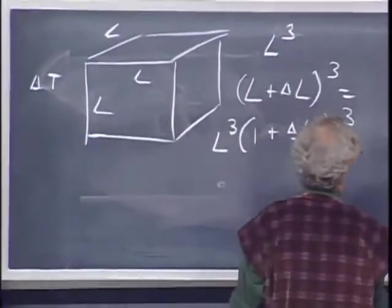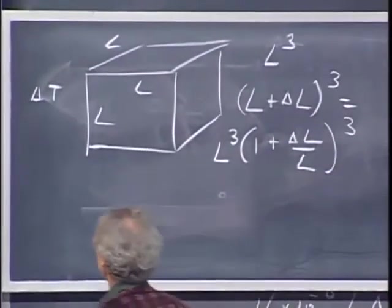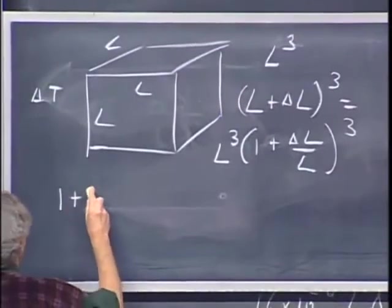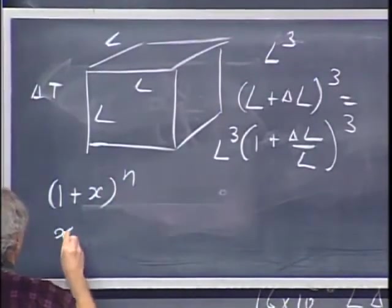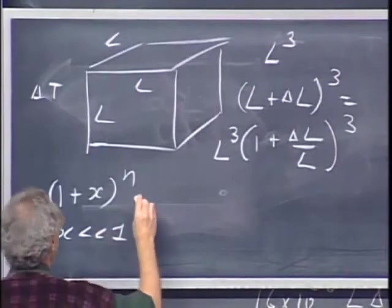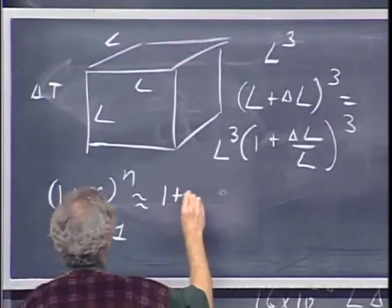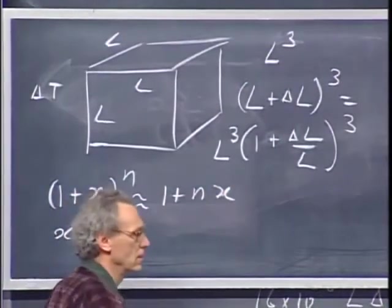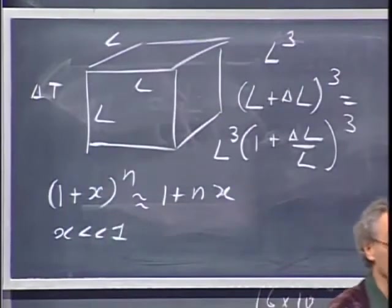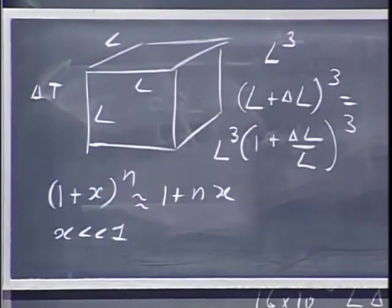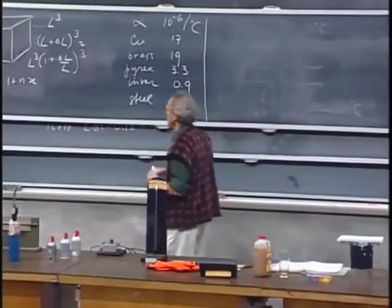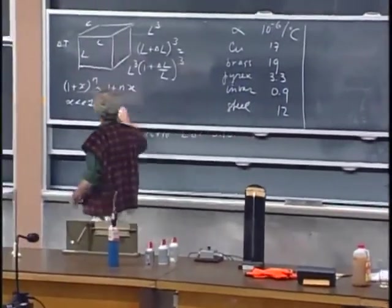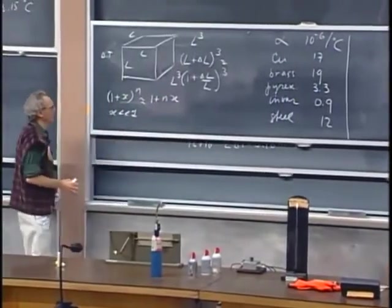Now, perhaps you remember, or at least you should remember, that one plus x to the power n, in case that x is much smaller than one, is approximately one plus nx. We've used that before when we discussed the Doppler shifts, lights from receding stars. This is called the binomial series, binomial expansion. It's really the first-order terms of the Taylor expansion.